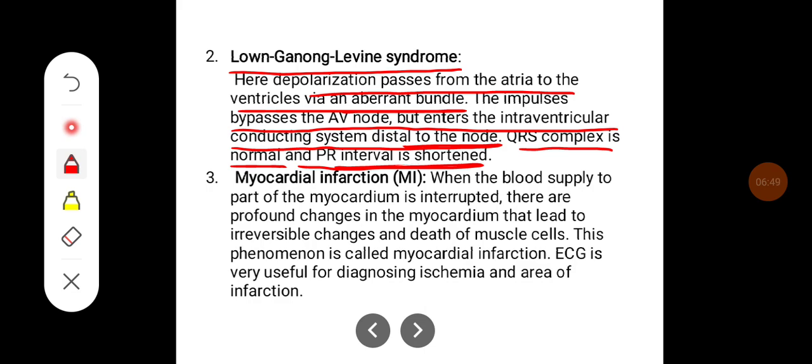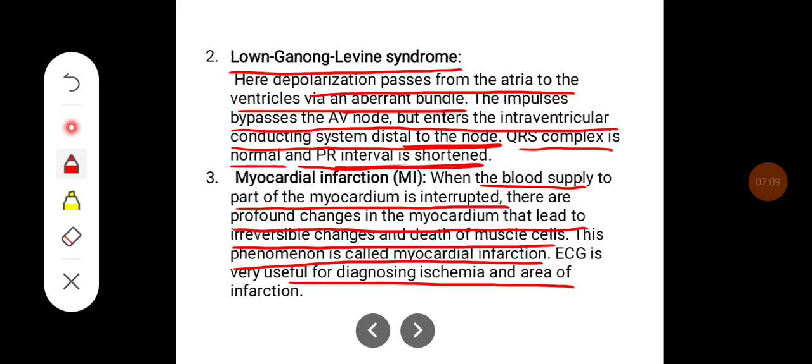In myocardial infarction, when blood supply to the part of the myocardium is interrupted, there are profound changes in the myocardium that lead to irreversible changes and death of the muscle cells. This phenomenon is called myocardial infarction and ECG is very useful in diagnosing ischemia and area of infarction.